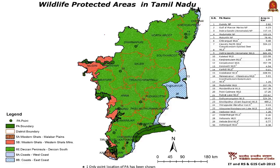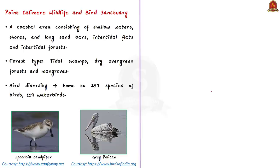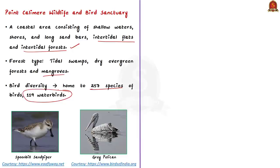Point Kalamir Wildlife and Bird Sanctuary is located in Tamil Nadu. It is a coastal area consisting of shallow waters, shores, long sandbars, intertidal flats and intertidal forests. It has a unique forest consisting of tidal swamps, dry evergreen forests and mangroves. This bird sanctuary has recorded some 257 species of birds, among them around 120 species of water birds, including the spoonbill sandpiper, the grey pelican, and some 30,000 greater and lesser flamingos.